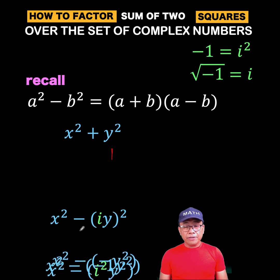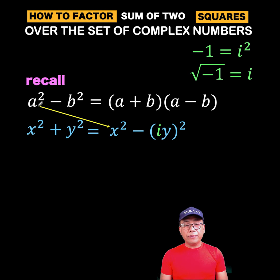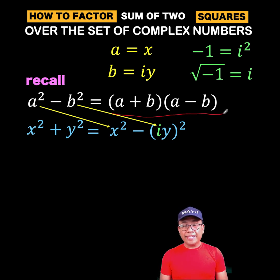Now, this form is exactly the form of the difference of two squares where our a is x and our b is i y. And this is now in the form a squared minus b squared. So we can now apply this identity.